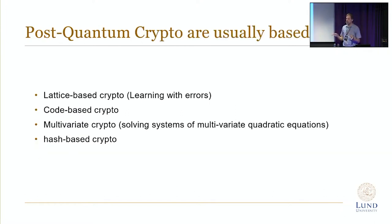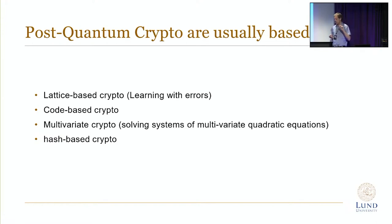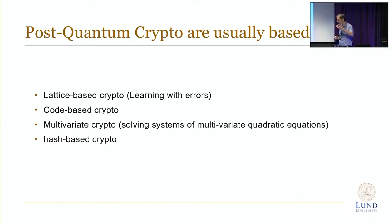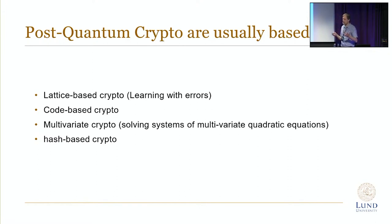What new problems are we looking at in the post-quantum area? The main areas are: first, lattice-based cryptography, which builds on difficult problems in lattices — looking at integer combinations of different vectors. Second is code-based cryptography, based on difficult problems in decoding general codes. There are also other possible areas where such difficult problems can be found.